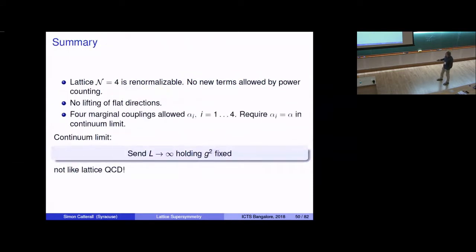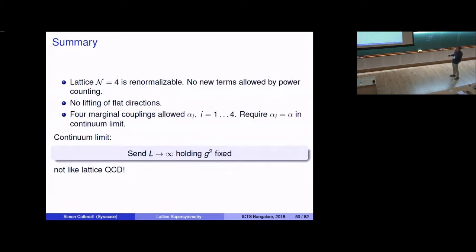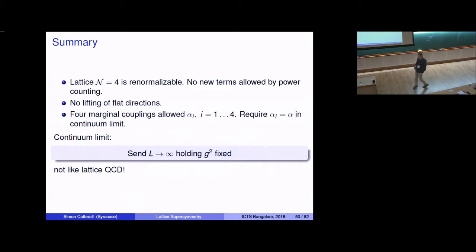Summary of renormalizability: the theory is certainly renormalizable, no new terms allowed by power counting, no lifting of flat directions in perturbation theory. There are in principle four marginal couplings (alphas) set to one in the classical action that could renormalize independently. For N=4 the continuum limit holds g^2 fixed and sends the box to infinity, possibly log-tuning marginal operators. Using field rescalings, one can set three of the four alphas to one, leaving only one to tune — sufficient for thermodynamics.